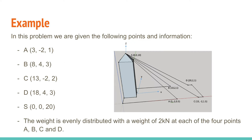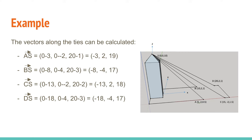Thanks Ben. In the problem mentioned, we are given the following points A, B, C, D and S as shown. We are also told that the weight is distributed evenly with a weight of 2kN at each of the 4 points A, B, C and D. The vectors along each tie can be easily calculated by subtracting each component of the point S by the corresponding point, as seen here.